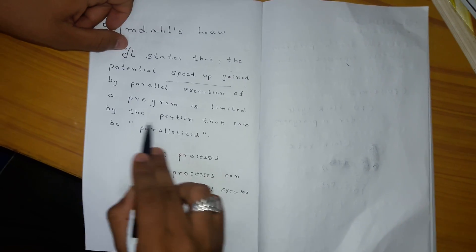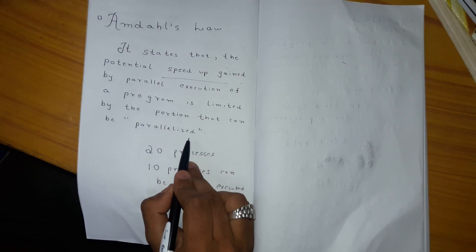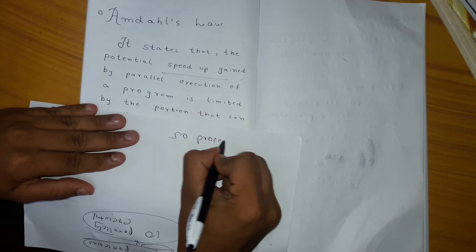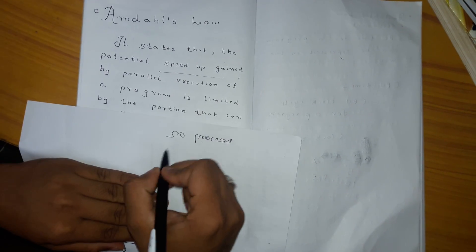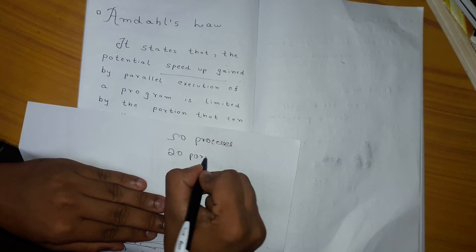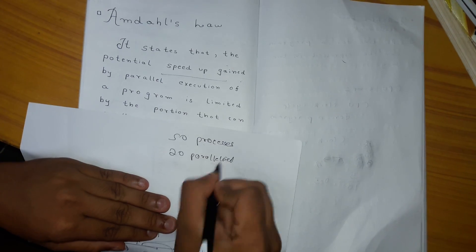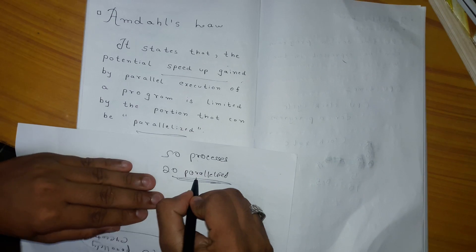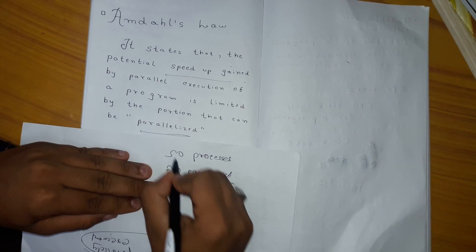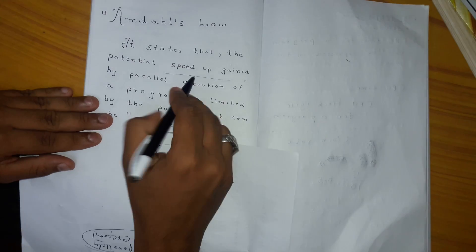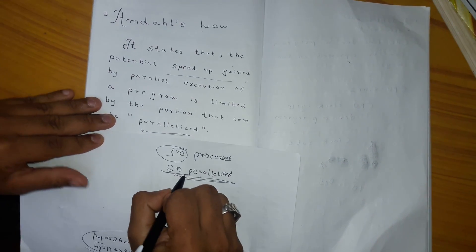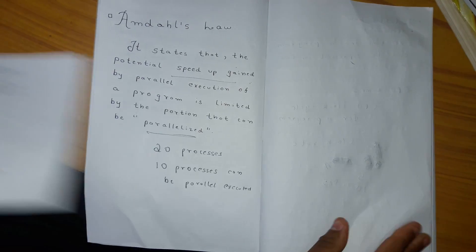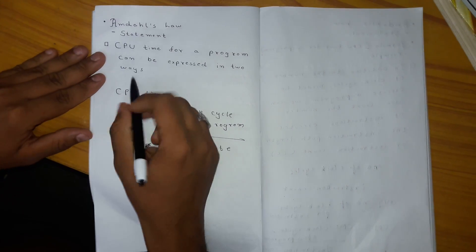is limited by the portion that can be parallelized. For example, suppose we have 50 processes and only 20 can be parallelized. Parallelized means we can execute them in parallel. So we can only execute 20 processes parallelly out of 50 processes. The speedup gained will be 20 because only 20 processes can be executed in parallel.